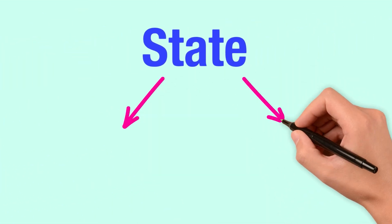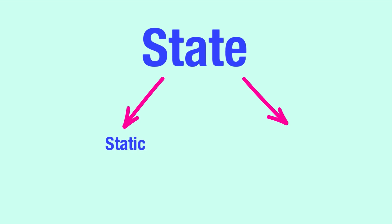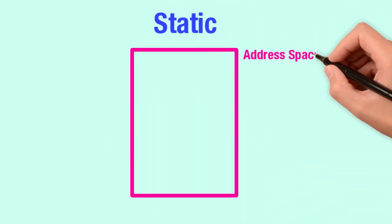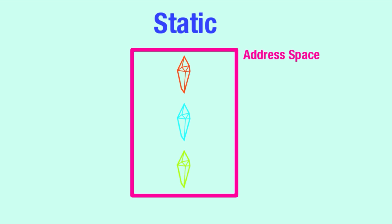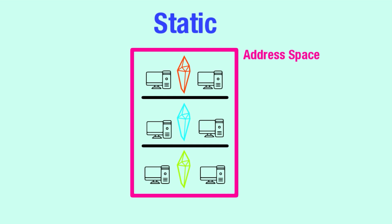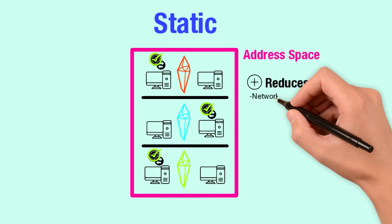State sharding is subdivided into static and dynamic forms, the first of which is static state sharding. Static state sharding typically divides the address space into equal-sized shards, which are stored and processed by different sets of nodes. Transactions are routed and processed only by specific nodes. This form of sharding reduces network bandwidth, computation, and storage.